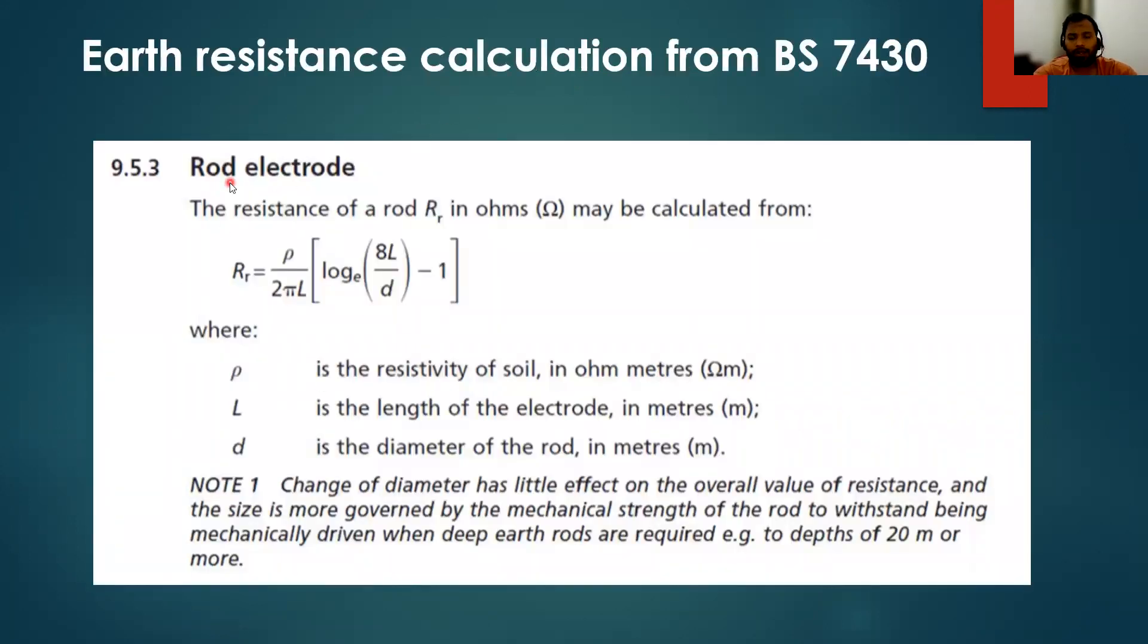How to calculate the resistance of earth rod? According to BS 7430 standards, earth rod formula: Rr = ρ/(2πL) × [log(8L/D) - 1]. In this formula, where ρ is equal to resistivity of soil, L is equal to length of electrode, D is the diameter of the rod. Basically, these three parameters will decide the earth rod resistance.